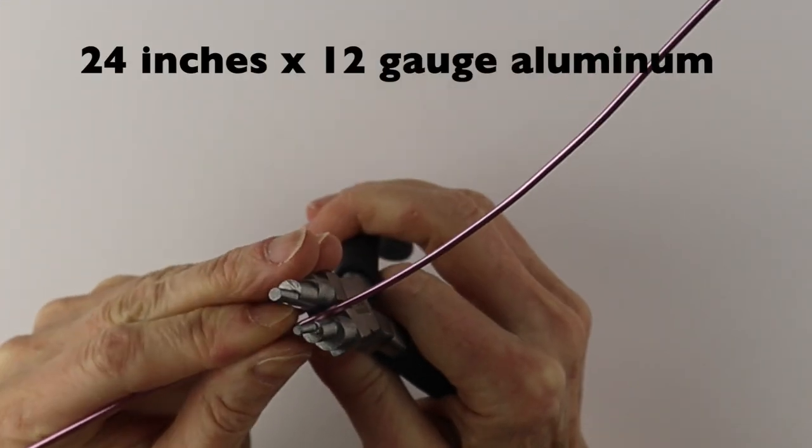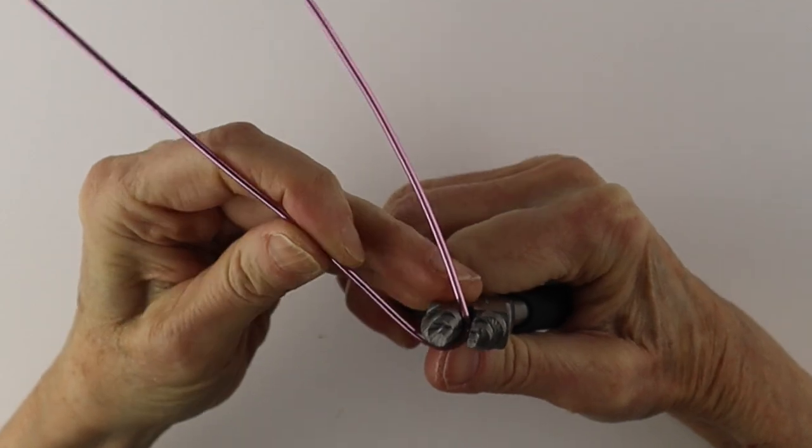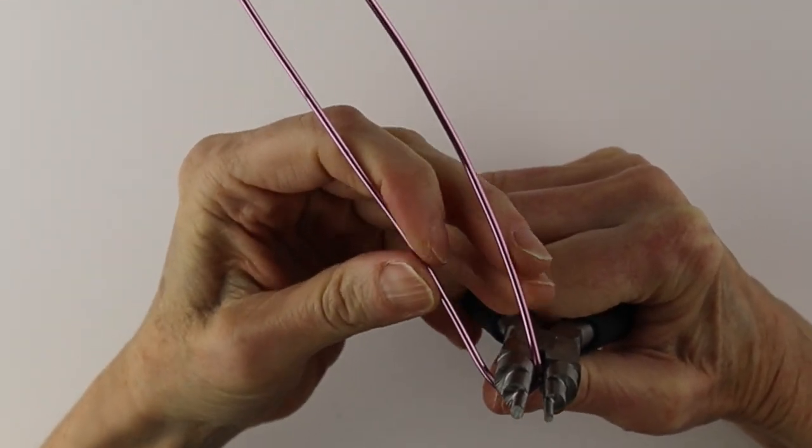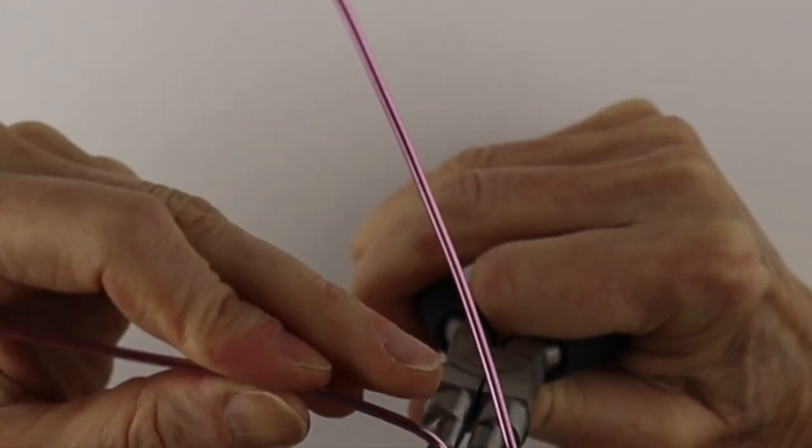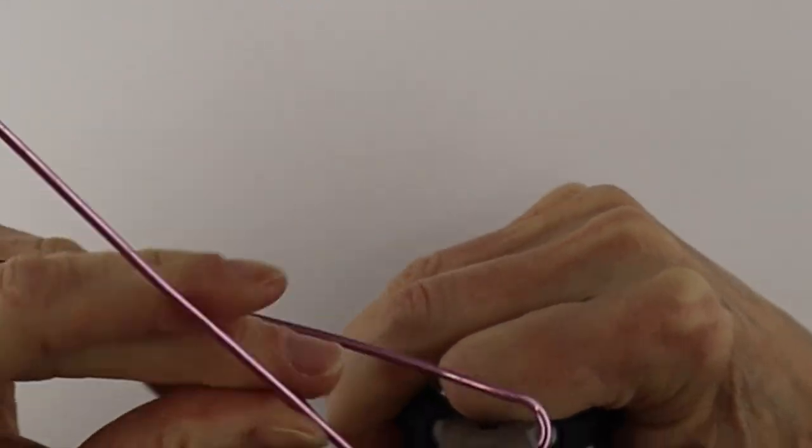For the next one we're using about 24 inches of 12 gauge aluminum wire. This is a new wire from Beadalon. Thank you Beadalon for sending me this amazing wire. This is a lovely rose color.